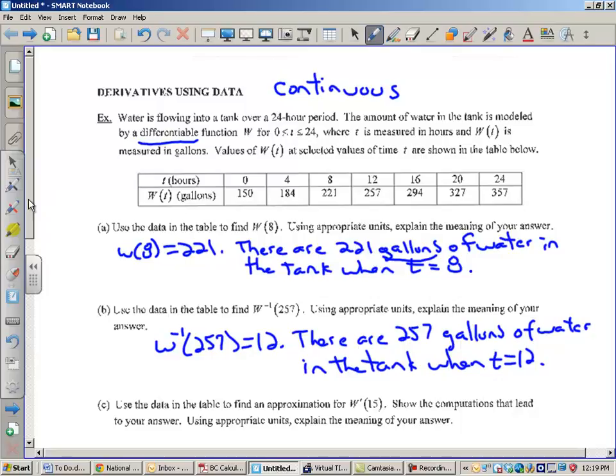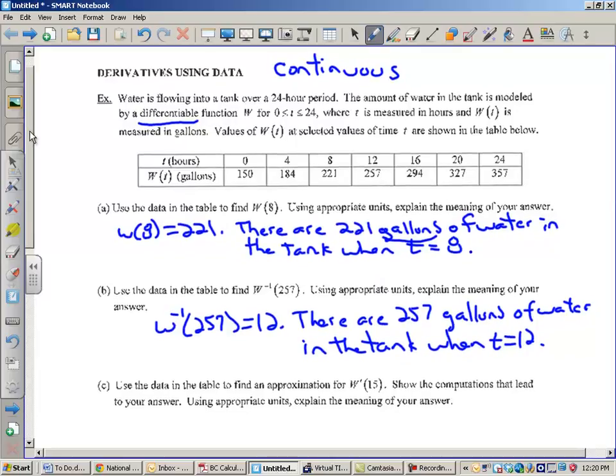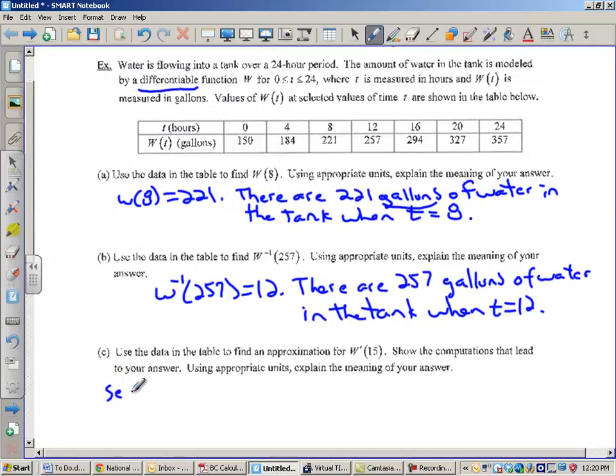The next part is a very common question on the AP exam. The first two are sort of leading us up to that. Use the data in the table to find an approximation for W prime of 15. We approximated yesterday W prime, this means the derivative or the slope, by looking at graphs. But, we can also approximate the derivative by looking at a table. Now, when we did it graphically, we would select two points that were close to the value. We would connect them with the secant line and then we would estimate the value of that slope. That's exactly what I'm going to do here. I'm going to find a secant line that contains T equals 15.